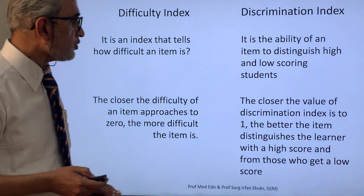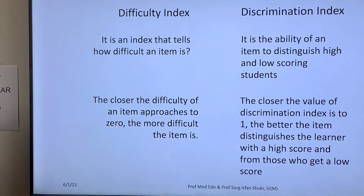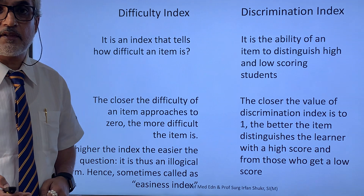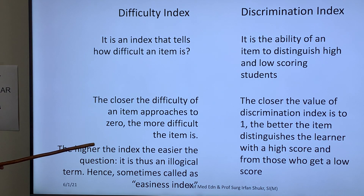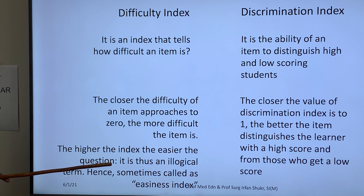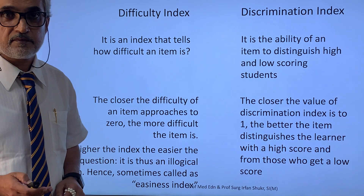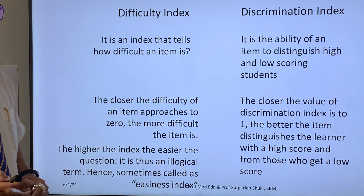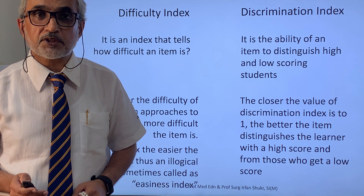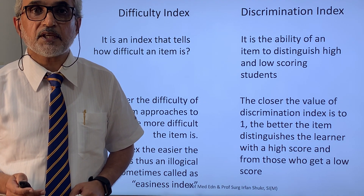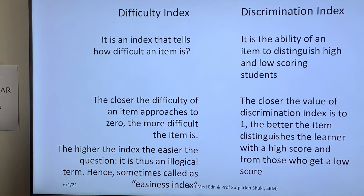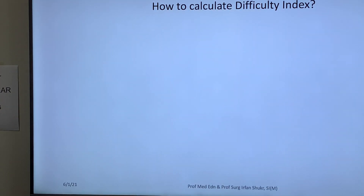Usually one might think the higher the score, the more difficult the question should be. However, the higher the index, the easier the question is. It is thus an illogical term and sometimes called the easiness index. But across the Atlantic it is called the difficulty index, and a majority of medical educationists follow the term difficulty index rather than easiness index. The range is 0.00 to 1.00.